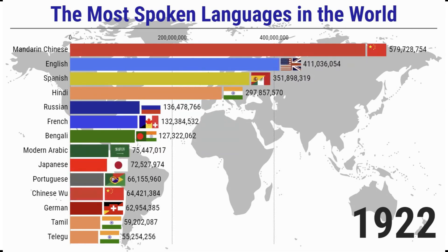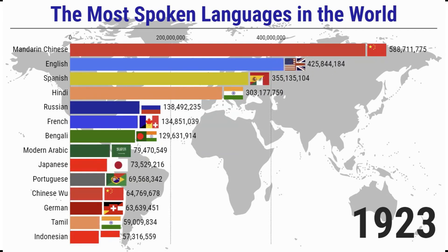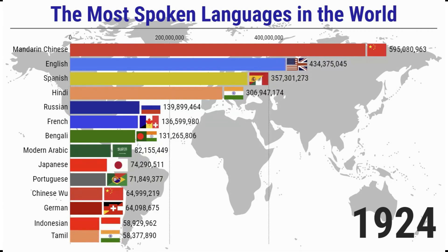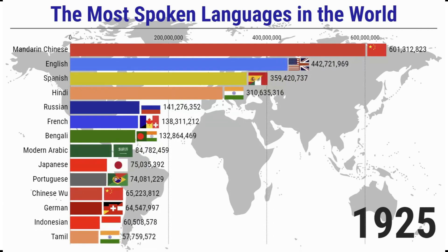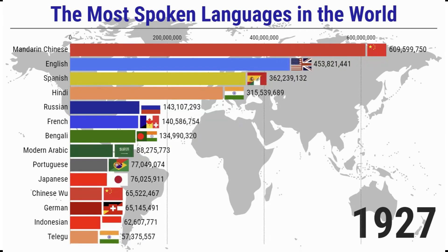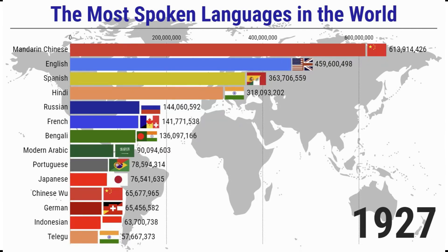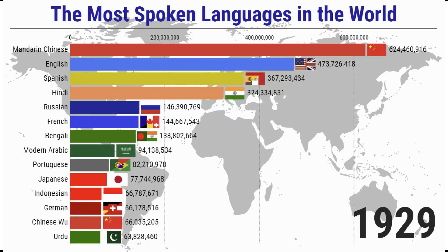Population ranking in official languages: there are 2.7 billion people in countries and regions where English is the official language, making it the language spoken by the most people on earth. The population using Hindi as the official language is about 1.5 billion, ranking second. The population with Chinese as the official language exceeds 1.45 billion, ranking third.